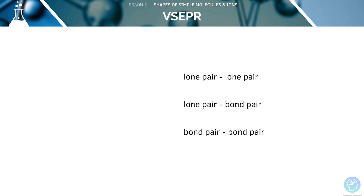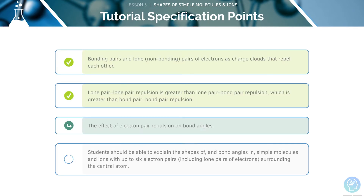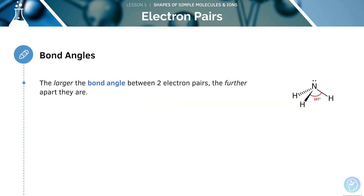You need to learn the following types of repulsion as well as their strengths. Bond pair–bond pair repulsion is the weakest and lone pair–lone pair repulsion is the greatest. Now we will look at the effect of this electron pair repulsion on bond angles. As lone pairs of electrons have the strongest repelling effect, there is the greatest bond angle between them. The larger the bond angle between the two pairs of electrons, the further apart they will be, meaning there is a greater repulsion between them.